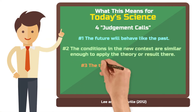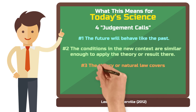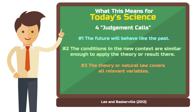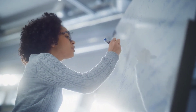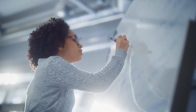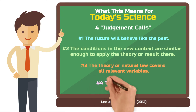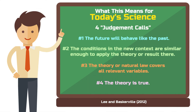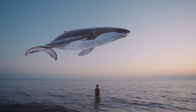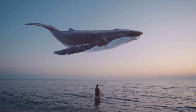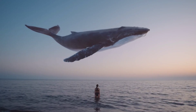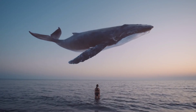Three: the theory or natural law covers all relevant variables. When you want to apply a theory, you must assume it is complete and hasn't overlooked any variable. Four: the theory is true. This judgment call would probably not sit well with Karl Popper, but to apply a theory you must assume it is true, even though Popper would argue this is never possible.